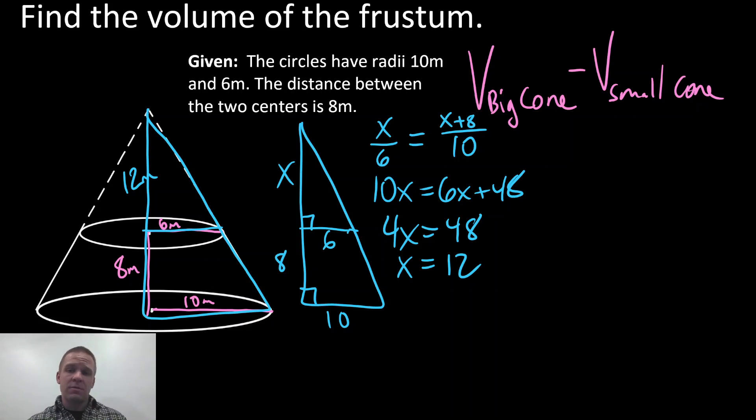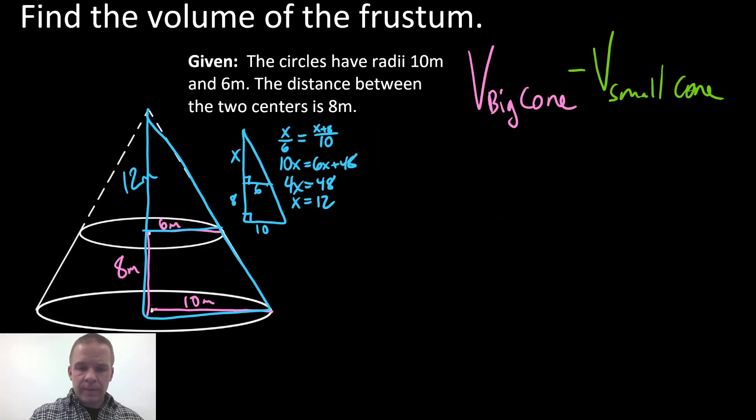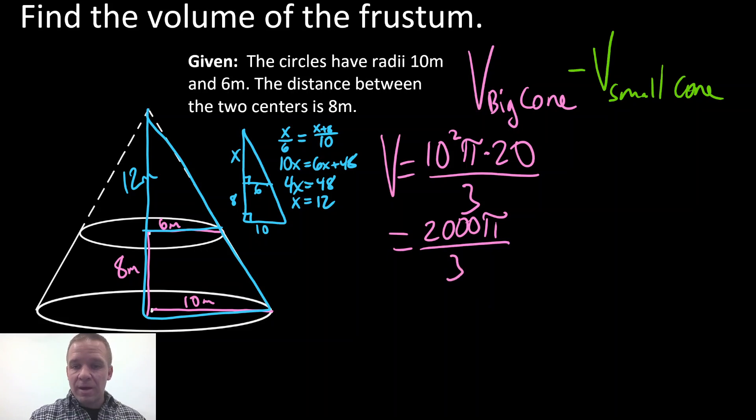Now it's time to find the volume of our big cone and subtract our small cone from it. So the volume of my big cone, we've got our base, that's going to be 10 squared pi. That's because it's a circle multiplied by my height, which is 12 plus 8, which is 20, divided by 3. So I've got 100 times 20, which is 2000 pi divided by 3. I'm going to leave that divided by 3 for now. I'm not going to try and simplify things or get a decimal. I'm just going to leave that.